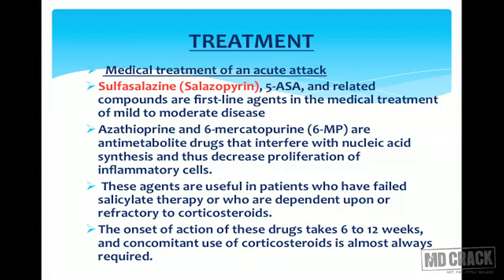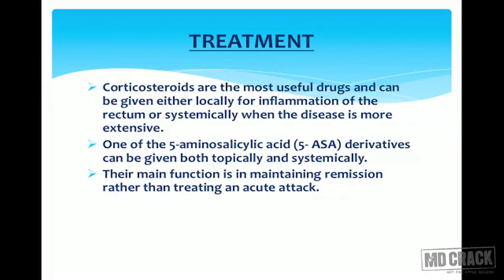Second line agents are azathioprine and 6-mercaptopurine (6-MP), which are anti-metabolite drugs that interfere with nucleic acid synthesis and decrease proliferation of inflammatory cells. These are useful in patients who have failed salicylate therapy or who are dependent upon or refractory to corticosteroids. The onset of action of these drugs takes 6–12 weeks and concomitant use of corticosteroids remains important.